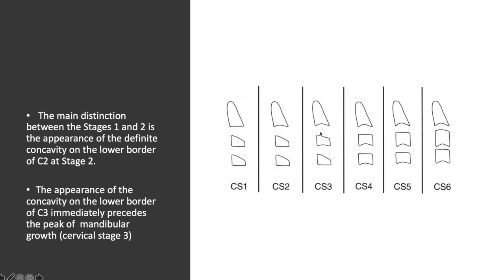Stage three: we can appreciate that the third cervical spine starts also to develop a concavity on its lower border. We can also notice that both cervical spine three and four are still trapezoid in shape.